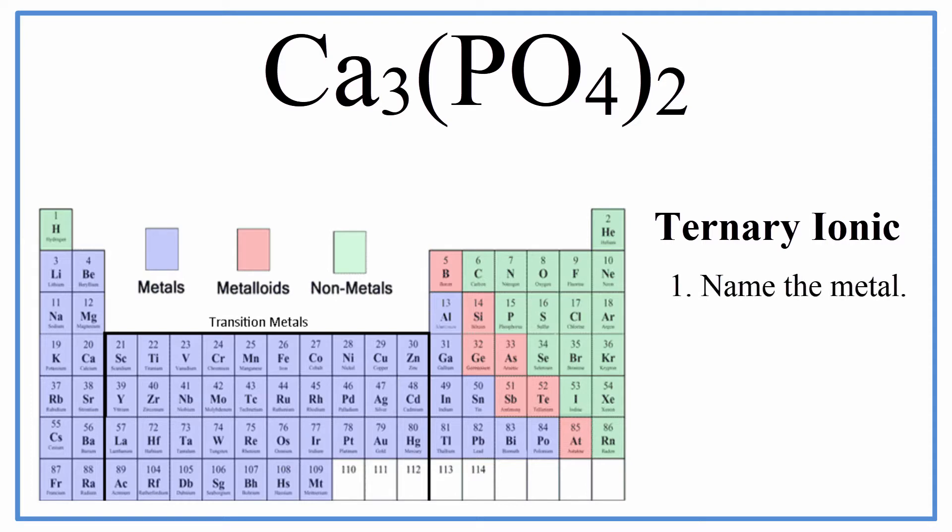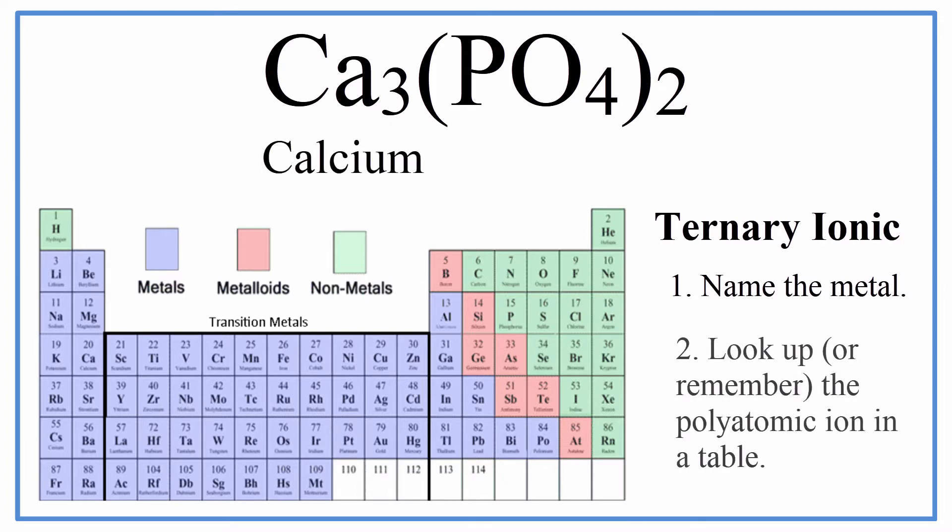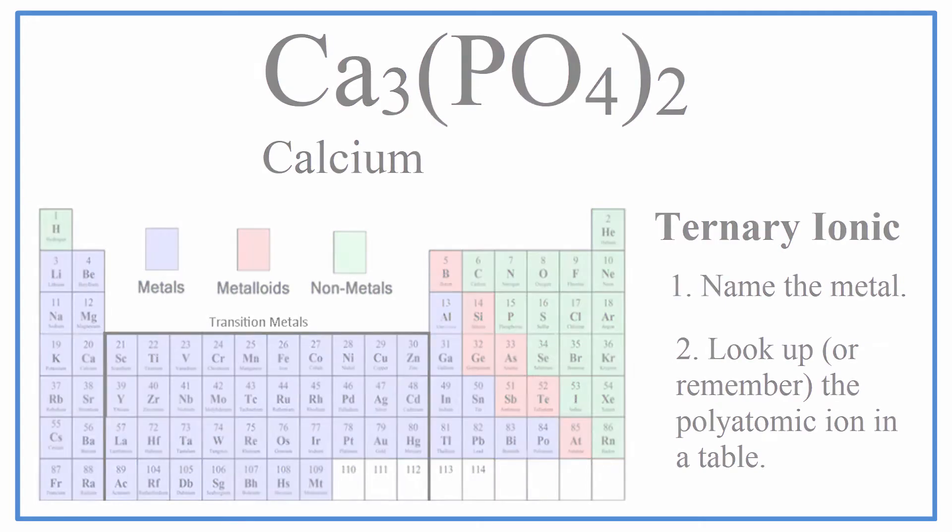We name the metal as it shows up on the periodic table. So Ca is just calcium. For the group of non-metals, the PO4, you need to either remember that it's called phosphate, or look it up on what's called a common ion table.